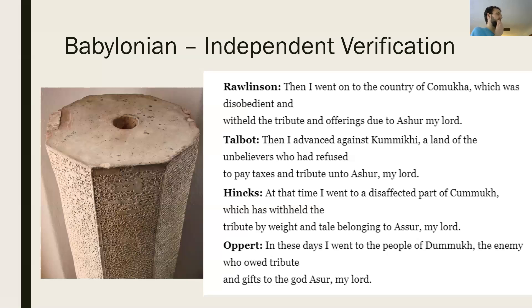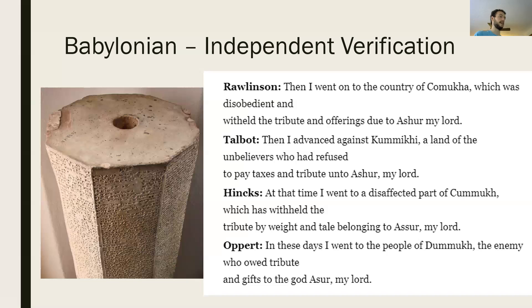These archaeologists disagreed on the exact way that the symbols represented sound information, but we can see that they were likely on the right track and had found the right kind of correspondences. Since it would be very unlikely that, had they made incorrect assumptions at the beginning, they would all happen to agree with each other — the fact that they all agreed is good evidence that they were on the right track for the correct decipherment.